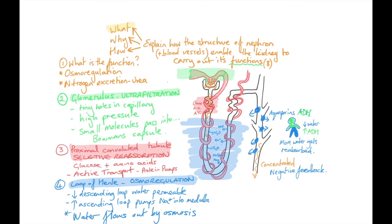We're at the end. Let's check. Explain is say what, say why, say how. So have we said what is the function of the kidney and the nephron overall? Yes, we have. We said osmoregulation and nitrogen excretion.